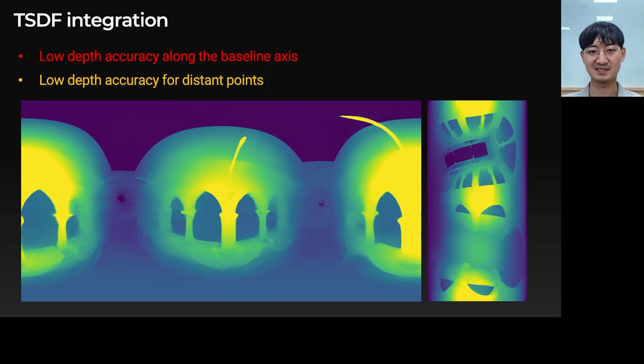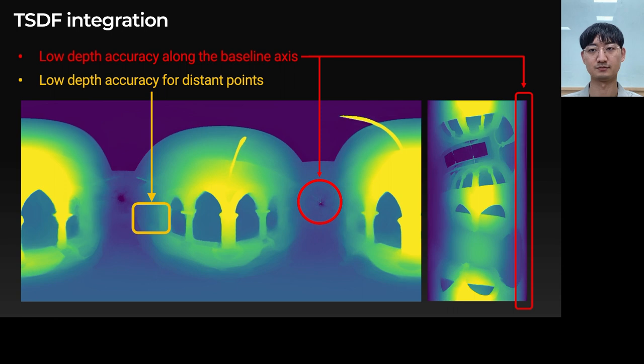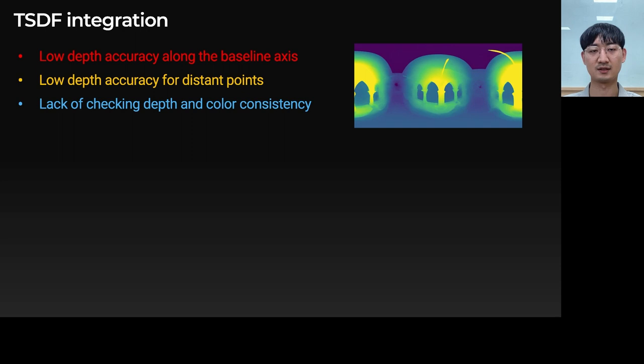Let's look at the depth map. First, the depth accuracy along the baseline axis is low. We can see this on the left and right sides of rectified images. It is because estimating depth along the baseline axis of a stereo image pair is geometrically impossible. Second, depth estimates of far surfaces are inaccurate, which is caused by a small disparity. Also, the lack of checking depth and color consistency is another problem.